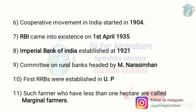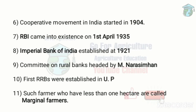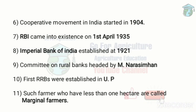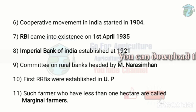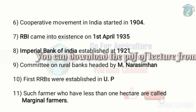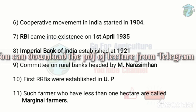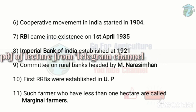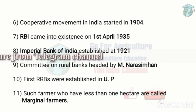The RBI came into existence on 1st April 1935, under the RBI Act of 1934. It was nationalized in 1949. The first Governor of RBI was Osborne A. Smith.